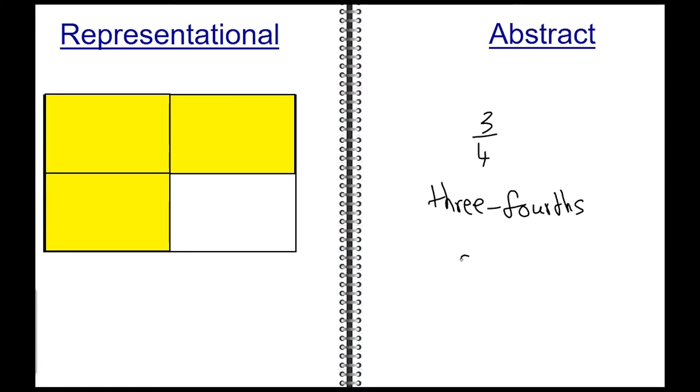And please note that 3 fourths is a fraction that is less than 1. Another rectangle, and in this case, shade in 3 parts out of the 8 parts in blue. So the abstract in this case is 3 eighths.